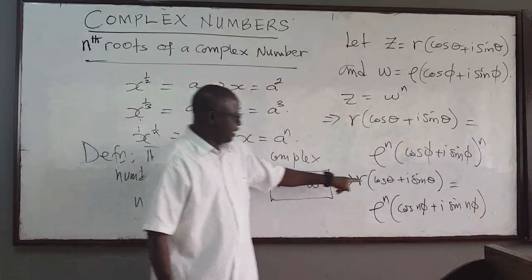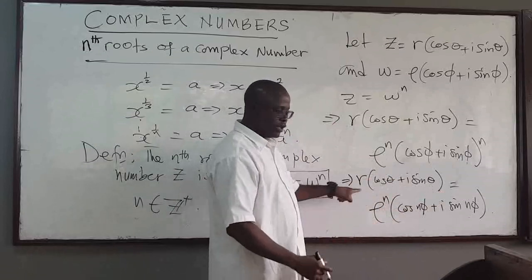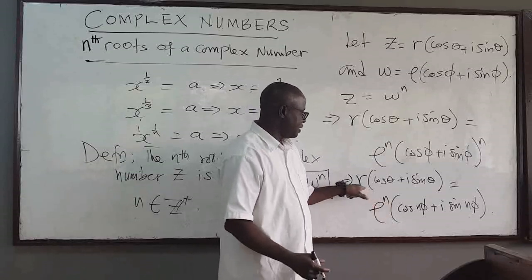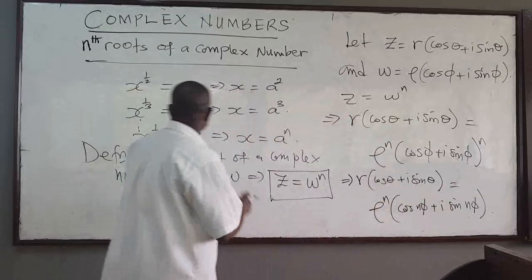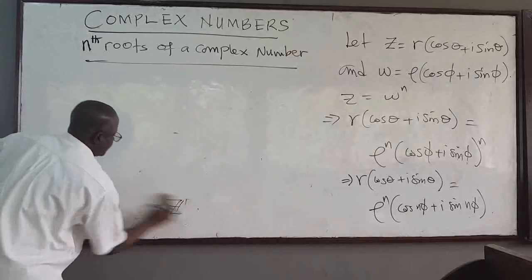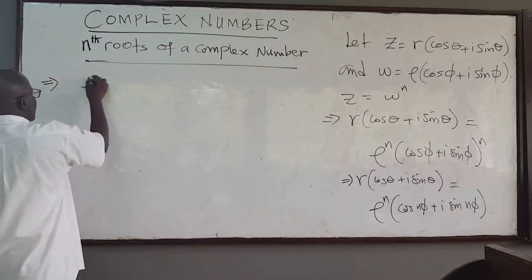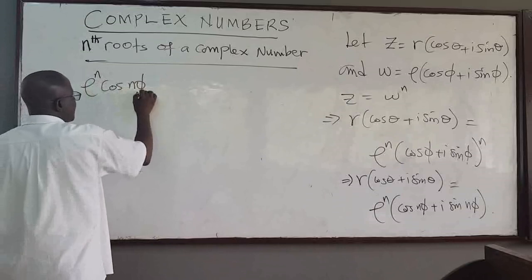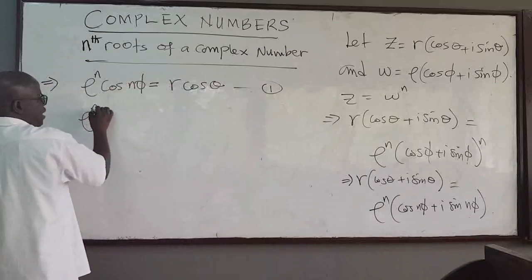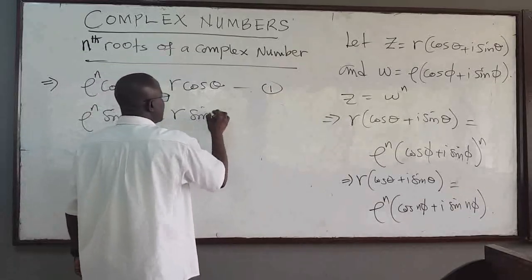We have the equality of two complex numbers. Since two complex numbers are equal when their real parts are equal and their imaginary parts are equal, this gives us: r cosine of theta equals rho to the n times cosine of n·phi — call this equation 1 — and r sine of theta equals rho to the n times sine of n·phi — call this equation 2.